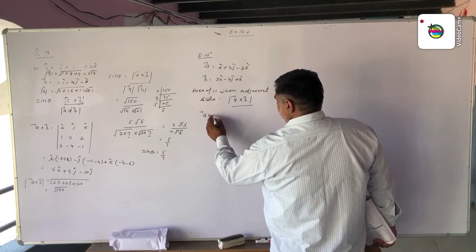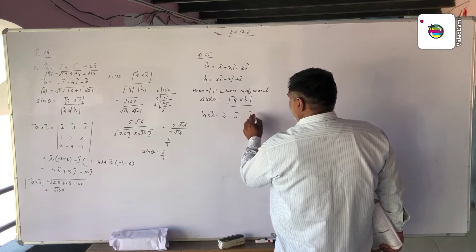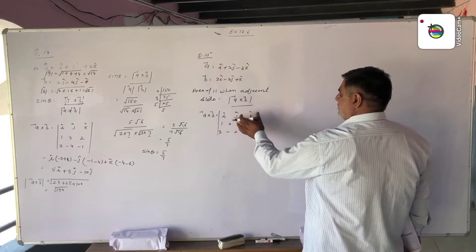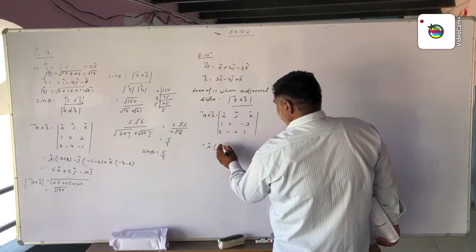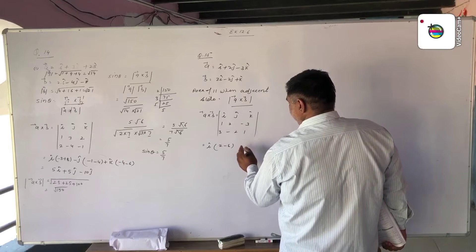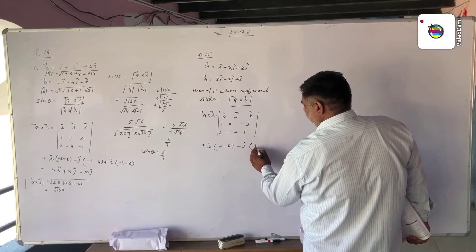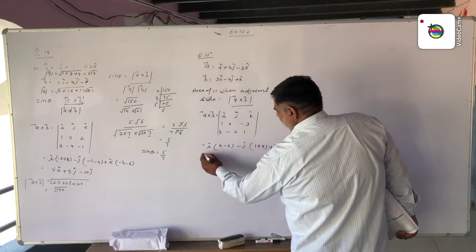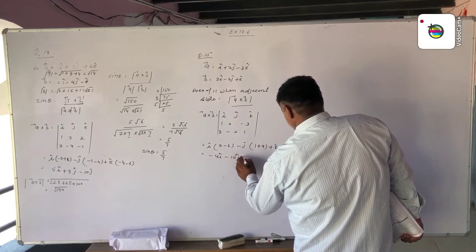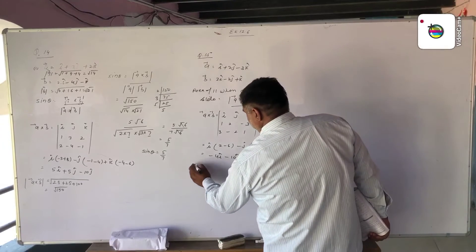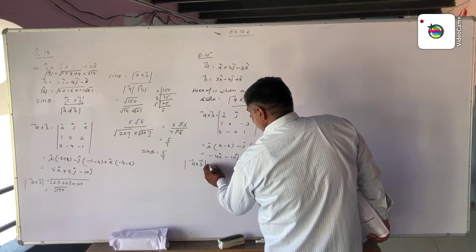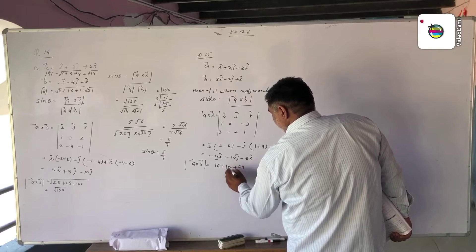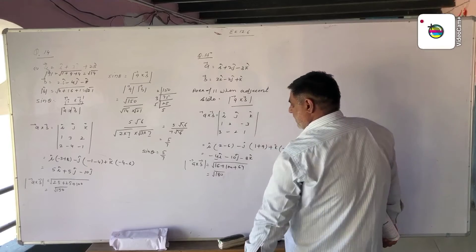Vector A cross vector B is set up with I, J, K in the first row. Expanding: I into (minus 2 minus 6) gives minus 4I, minus J into (3 plus 9) gives minus 10J, plus K into (minus 2 minus 6) gives minus 8K. The magnitude of A cross B is the square root of 16 plus 100 plus 64, which equals the square root of 180.